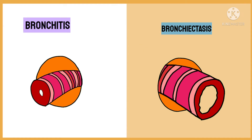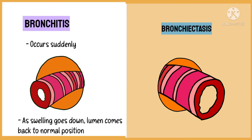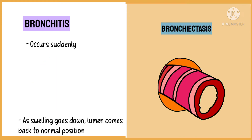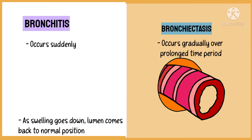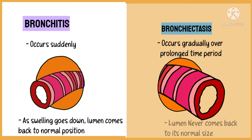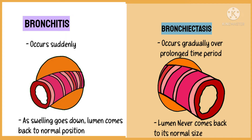Bronchitis will occur suddenly, and then as the patient recovers, the swelling reduces and the lumen comes back to its normal size. But in bronchiectasis, the damage occurs gradually over a prolonged period of time and the widened bronchi never come back to their normal lumen size.